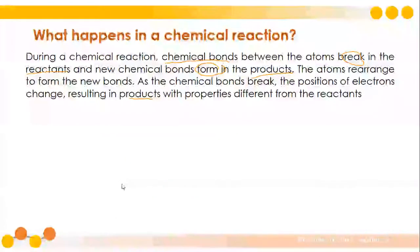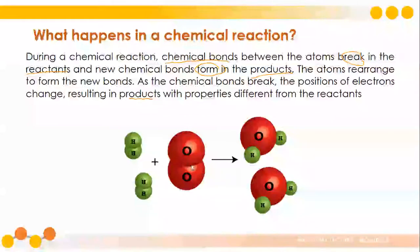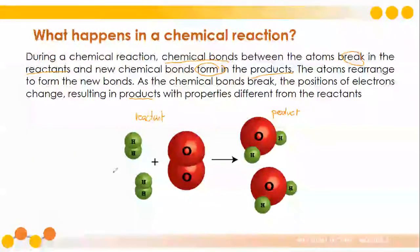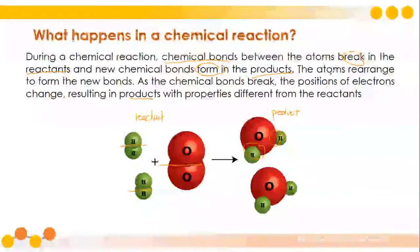Going back to the hydrogen gas and oxygen gas that will produce water, we have here the reactant side and the product side. Chemical bonds between the atoms break in the reactant side — these atoms separate from each other. Then new bonds are formed on the product side. The atoms rearrange themselves: instead of being paired as hydrogen-hydrogen and oxygen-oxygen, they are rearranged into a pairing of two hydrogen and one oxygen.